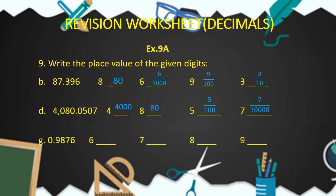Now let's come to part G. Here we have the decimal fraction 0.9876, and we have to find out the place value of the digits 6, 7, 8, and 9. 6 is at the ten-thousandths place, so the place value of 6 is 6 upon 10,000. The place value of 7, which is at the thousandths place, is 7 upon 1000. The place value of 8, which is at the hundredths place, is 8 upon 100. And the place value of 9, which is at the tenths place, is 9 upon 10.